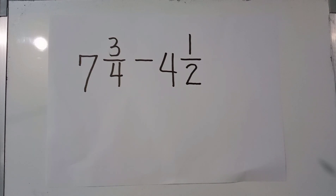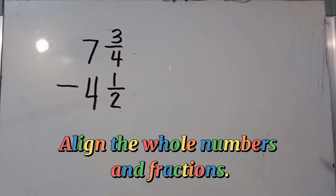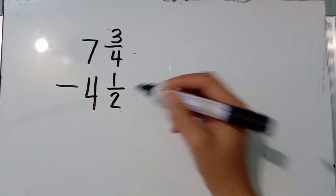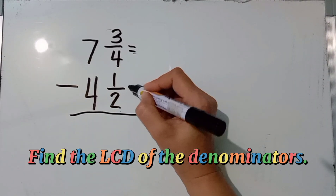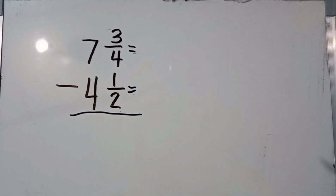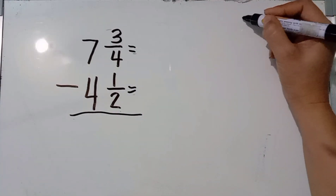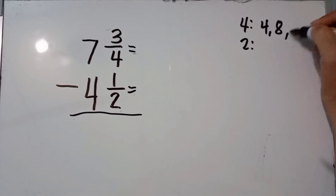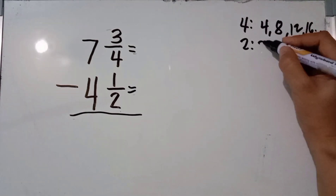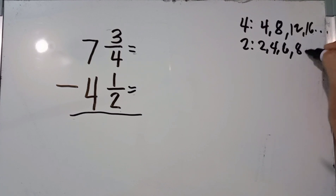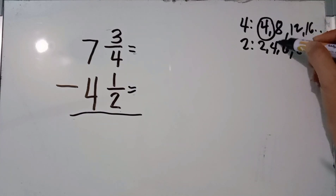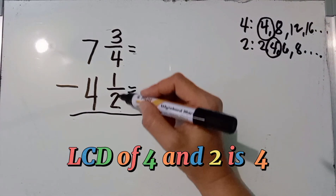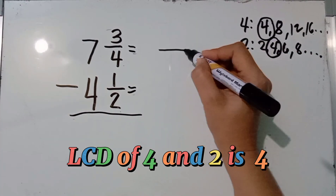Another example — we are going to subtract mixed numbers: 7 and 3 fourths minus 4 and 1 half. Align the whole numbers and fractions. Next, find the LCD of the denominators 4 and 2. Using the listing method: multiples of 4 are 4, 8, 12, 16; multiples of 2 are 2, 4, 6, 8. The common multiple is 4, so the LCD of 4 and 2 is 4.